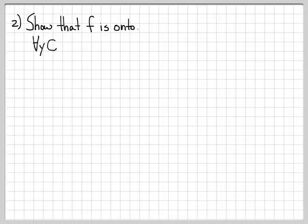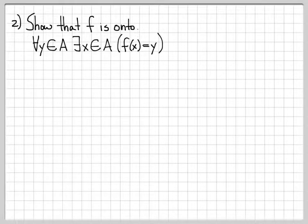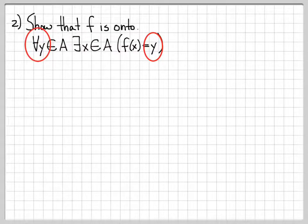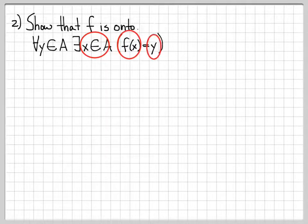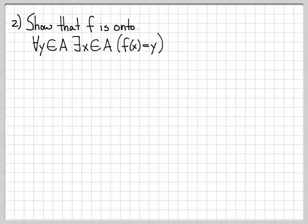In part two, let's show that f is onto. What does it mean for a function to be onto? It means that for all y in A, there exists an x in A such that f(x) = y. Pick any value you want in the range — I need to be able to find an x in A such that when I evaluate the function, I get to the point y. That's what it means to be an onto function.